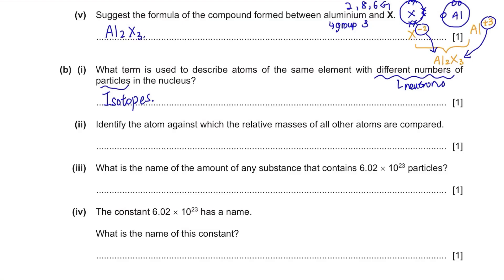Identify the atom against which the relative masses of all other atoms are compared. It's carbon-12. The amount of any substance that contains 6.02 × 10²³ particles is called a mole. The constant 6.02 × 10²³ is known as the Avogadro constant.